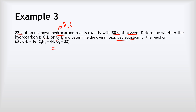Starting with CH₄: it reacts with O₂ to produce CO₂ and H₂O — when hydrocarbons react with oxygen they produce carbon dioxide and water. Balancing: carbon is already balanced (one each side). Hydrogen: four on the left, so put a two in front of H₂O to give four on the right. Oxygens: two on the left but four on the right, so put a two in front of O₂ to give four oxygens each side. The balanced equation is: CH₄ + 2O₂ → CO₂ + 2H₂O.